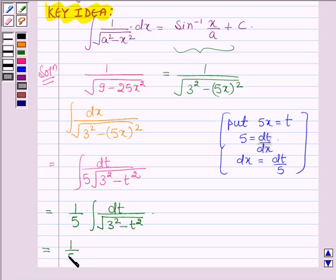Therefore, it can further be written as 1 upon 5 sine inverse x is t and a is 3 plus c where c is a constant.